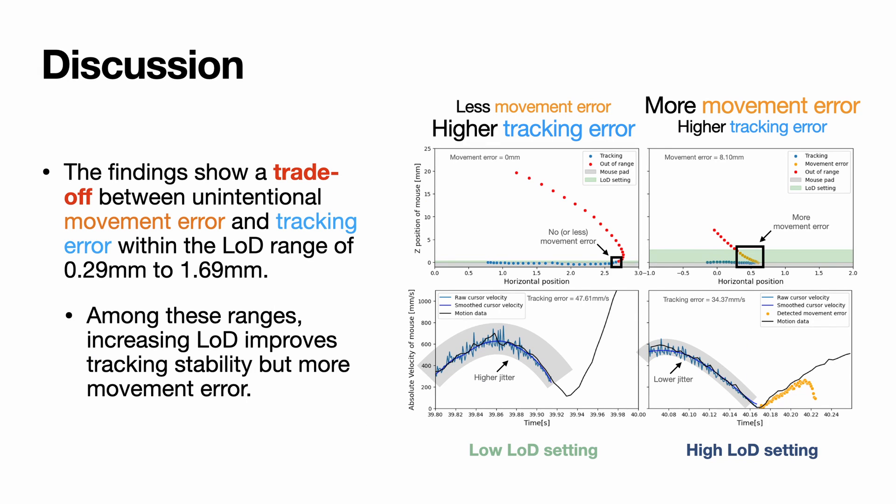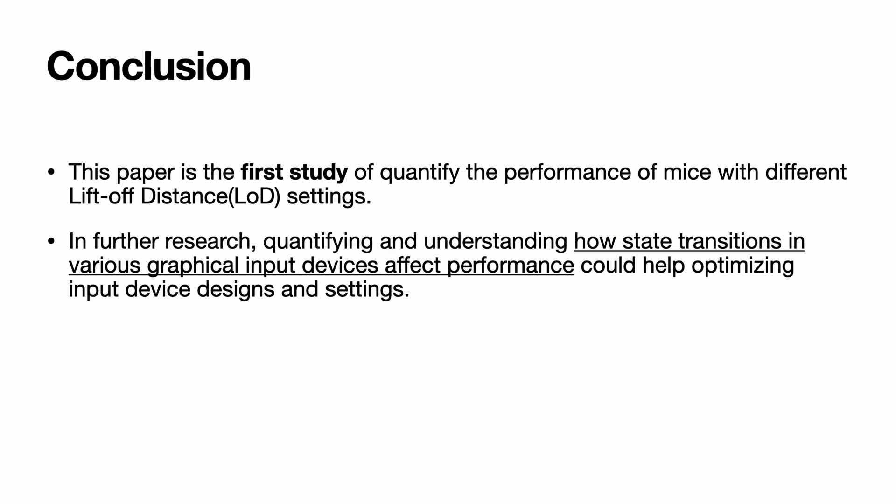The findings show a tradeoff between unintentional movement error and tracking error within the range of 0.29 mm to 1.69 mm. Among these ranges, increasing LOD improves tracking stability but produces more movement error. In conclusion, this paper is the first study quantifying the performance of mice with different lift-off distance settings. In further research, quantifying and understanding how state transitions in various graphical input devices affect performance could help optimize input device designs and settings.